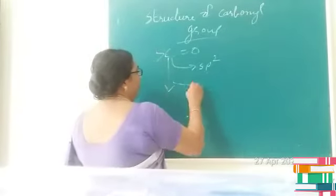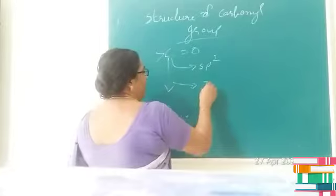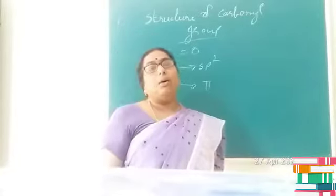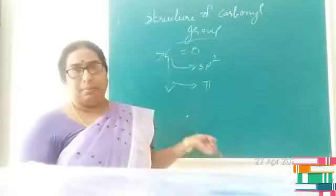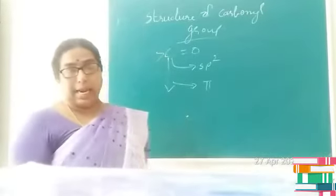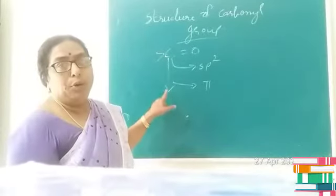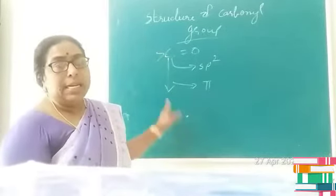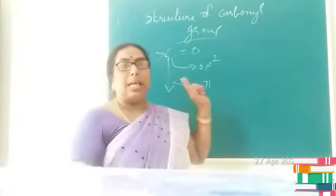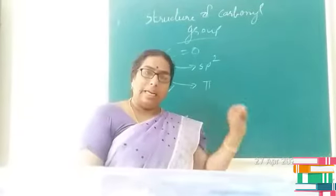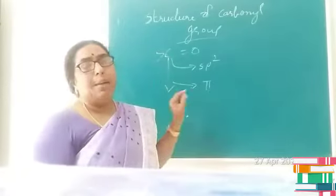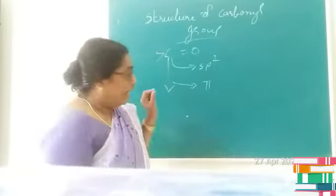That fourth valence electron is able to form a pi bond along with the electron in the p orbital of the oxygen atom. The fourth valence electron in carbon, remaining in the p orbital, overlaps with the electron of oxygen in the p orbital to form a pi bond.